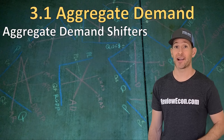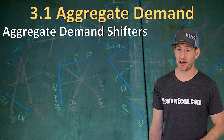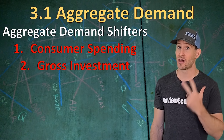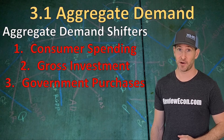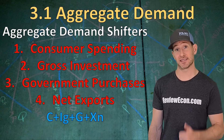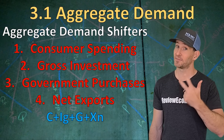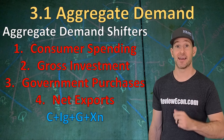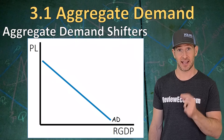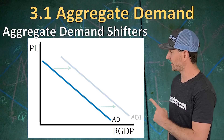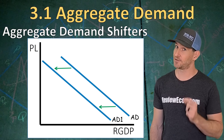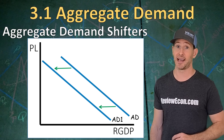We have four aggregate demand shifters you need to know. The first is consumer spending, the second is gross investment, the third is government purchases, and the fourth is net exports. Altogether, this is C plus IG plus G plus XN — the formula for the output expenditure model of GDP. If any of those things increase, it will shift the aggregate demand curve to the right. If any of those things decrease, it will shift the aggregate demand curve to the left.